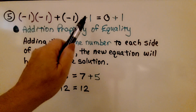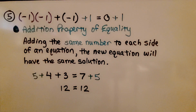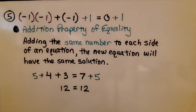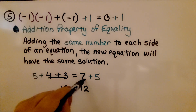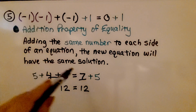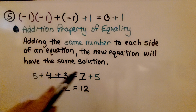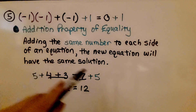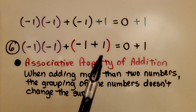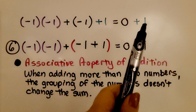If we add a 1 here and a 1 on the other side of the equal sign, we'll be using the addition property of equality. It says adding the same number to each side of an equation keeps the new equation with the same solution. For example, if we had 4 plus 3 equals 7, and we put a 5 on each side, then 4 plus 3 is 7 and 7 is 7; when we add 5 to each side, we get 12 equals 12 — the equation stays balanced. So we added a 1 to each side of the equal sign using the addition property of equality.